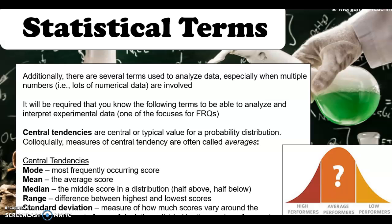Central tendencies are the central or typical value for a probability distribution. Basically, a central tendency is an average. If you're writing an essay, you're going to write about central tendencies, but the idea is that they are averages — that's what's basically happening. So this brings us back to math.